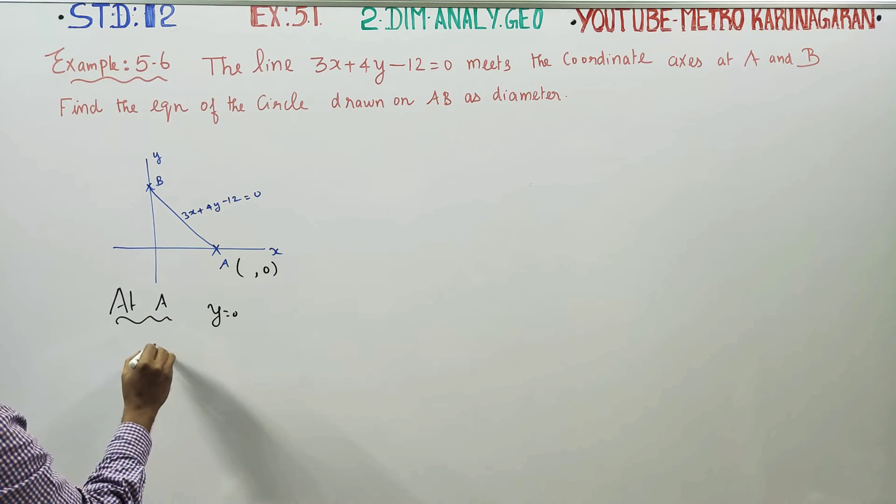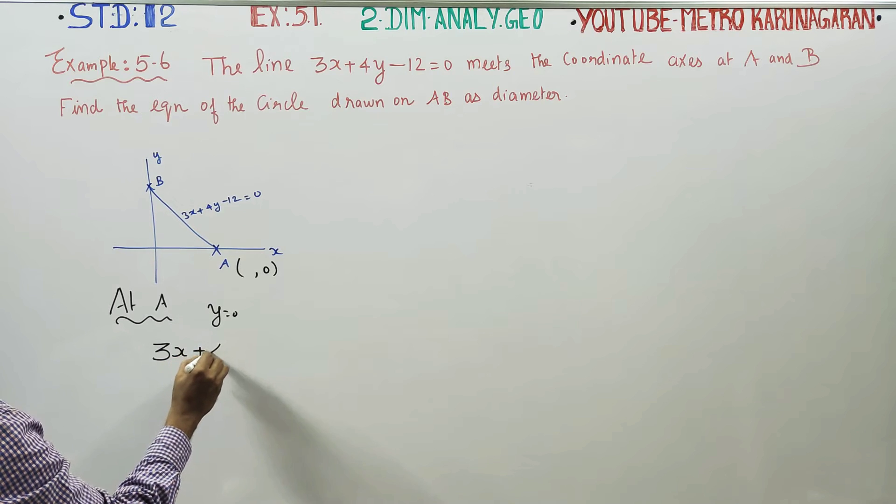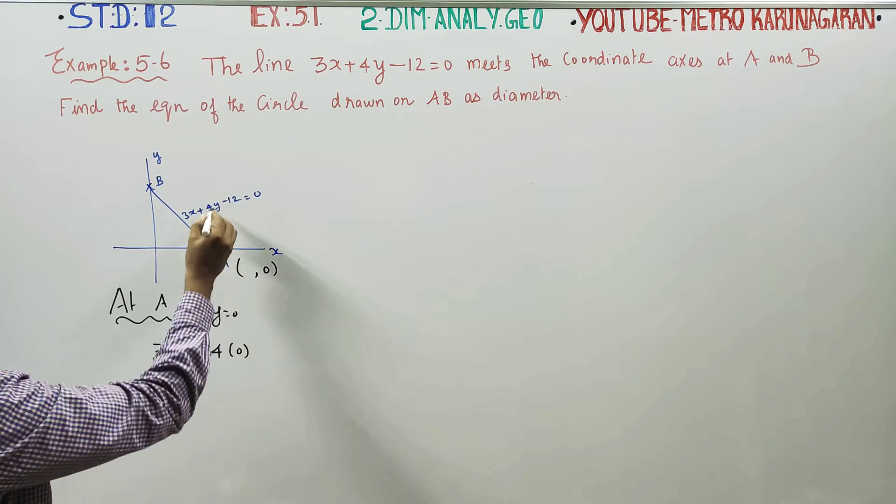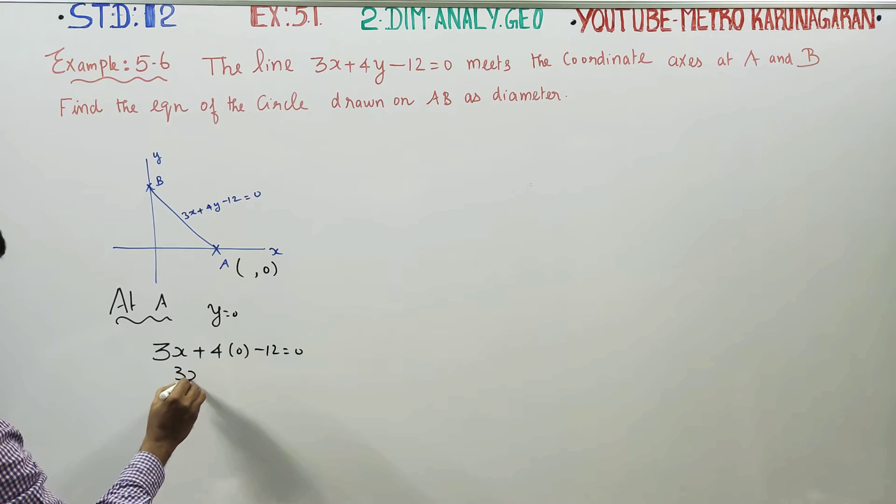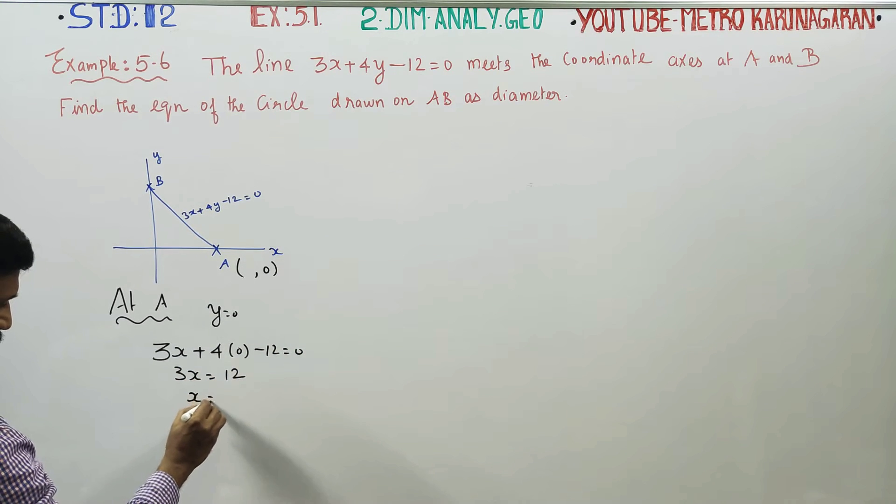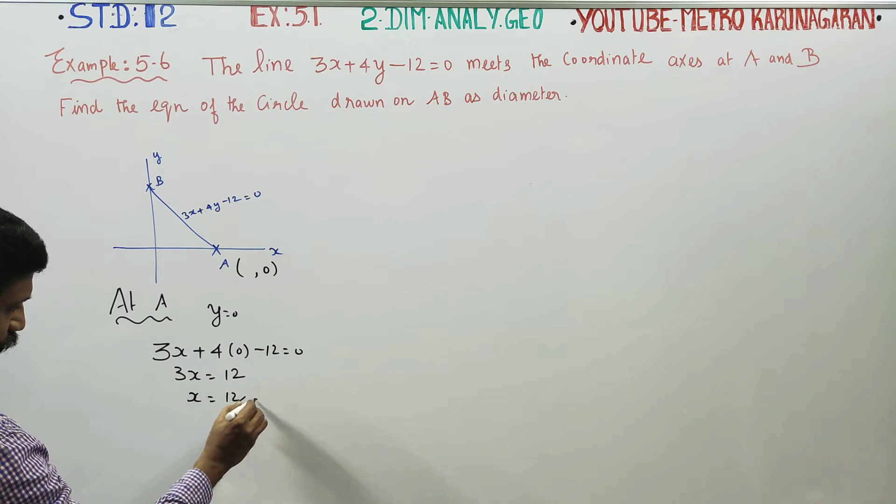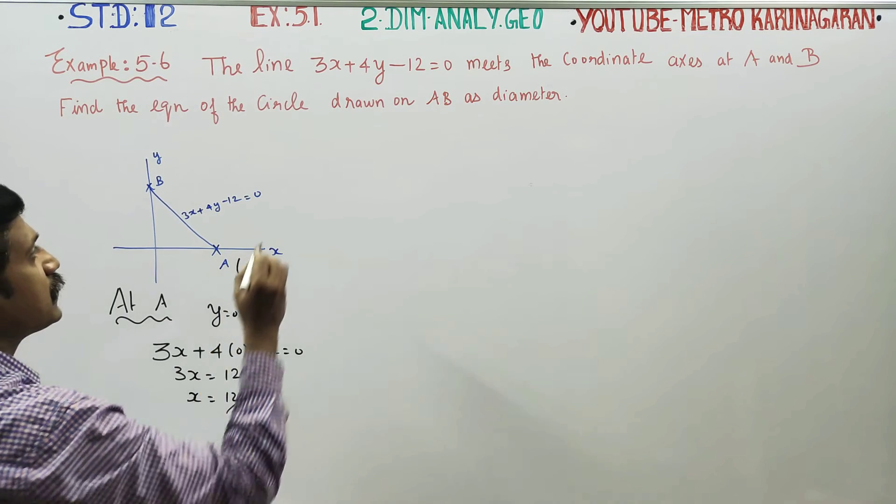Substituting y = 0 into the equation: 3x + 4(0) - 12 = 0, so 3x = 12, therefore x = 4.